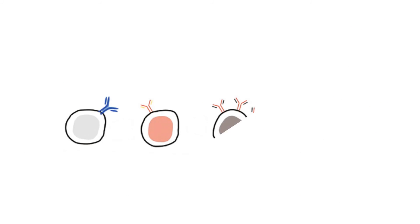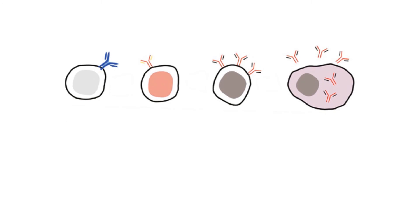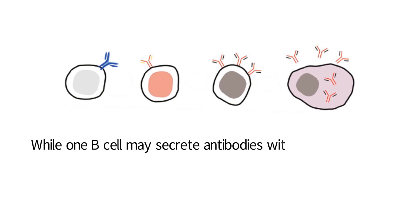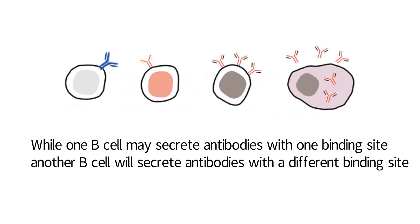For this reason, numerous B cells are needed for proper immunity. While one B cell may secrete antibodies with one binding site, another B cell will secrete antibodies with a different binding site, and so on, demonstrating the need for multiple B cells as part of the immune system.